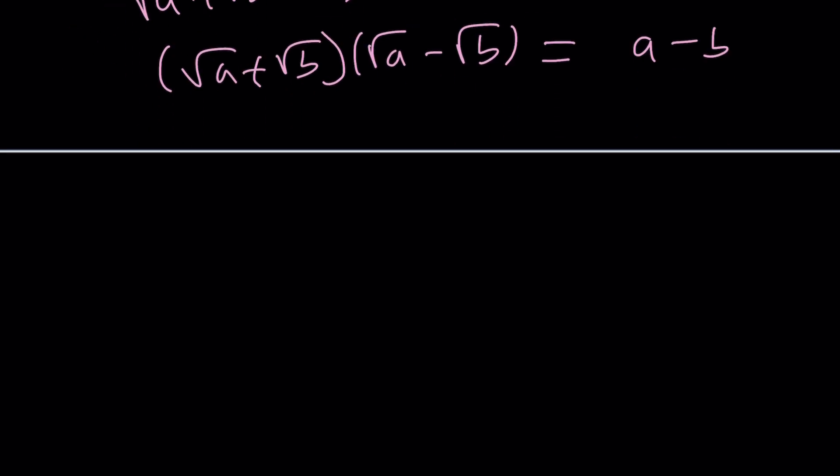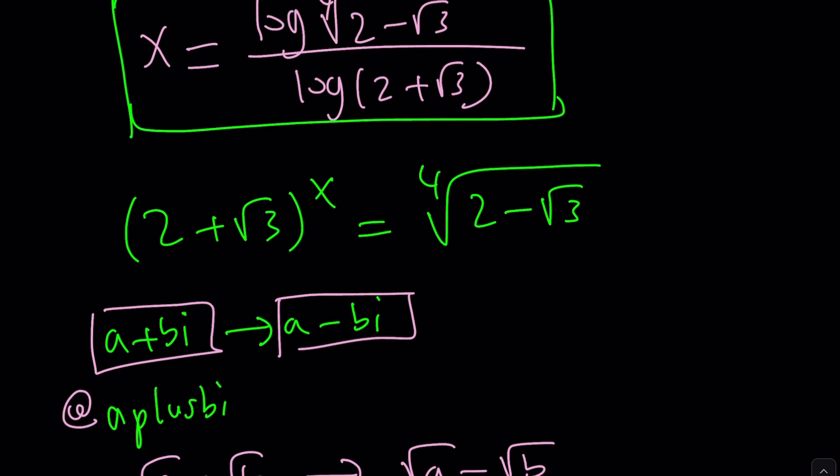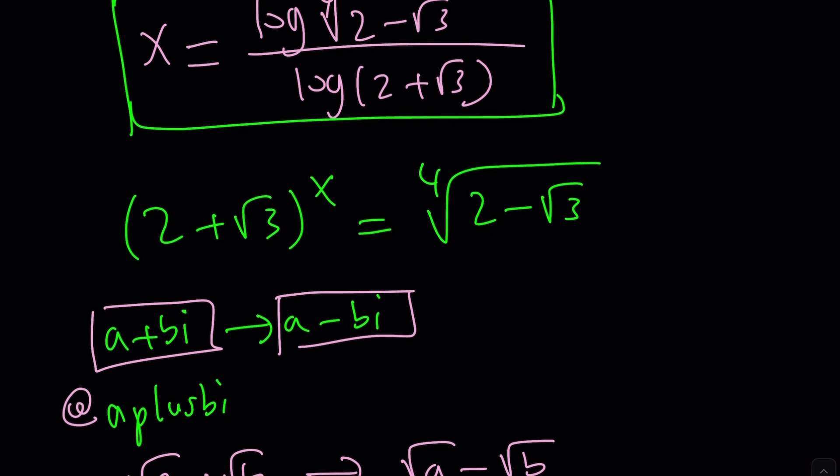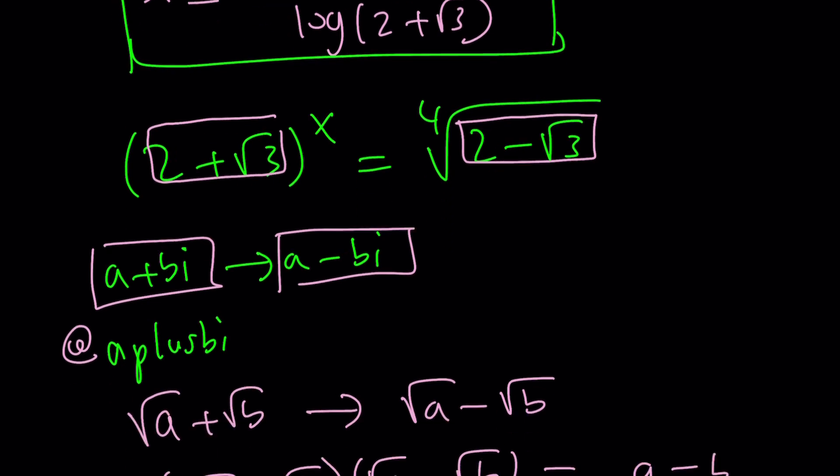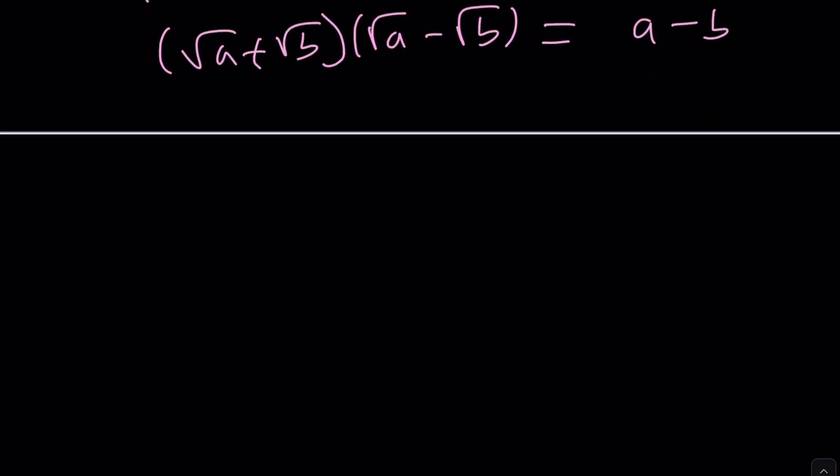So, now, if we apply this to our scenario, you need to notice, hopefully you did, that this one and this one are conjugates. But not only that, they are super conjugates. What does that mean? They're also reciprocals. What does that mean? Well, if you take 2 plus root 3 and 2 minus root 3 and multiply them, you get from difference of two squares, 4 minus 3, which is 1.